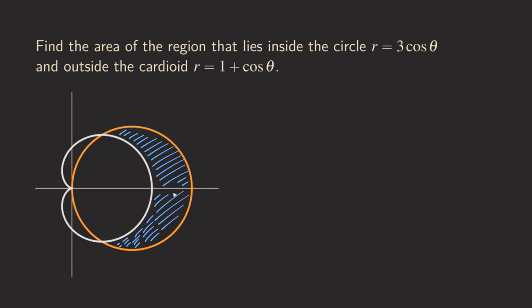How do we find this region? First, we know that we are going to start tracing the curve from theta equals 0, starting at this point here for both curves, tracing the curve this way. We want to see where they intersect and determine at what angle the two curves intersect. To find that, we can set the two functions equal to each other: 3 cosine theta and 1 plus cosine theta.